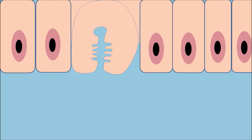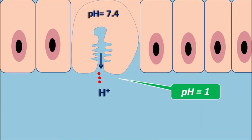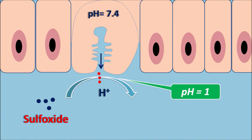Now let us see how Lansoprazole acts as a proton pump inhibitor. At the gastric parietal cells, within the membrane, the pH is around 7.4, but within the acidic canaliculi, proton pumps release H⁺ ions into the stomach, resulting in a gastric pH of around 1. Lansoprazole is available in a sulfoxide form but is not an active drug — it is a prodrug. Within the acidic environment, it is protonated and converted into a sulfenamide metabolite, which is the active metabolite that inhibits the proton pump and further release of gastric acid.